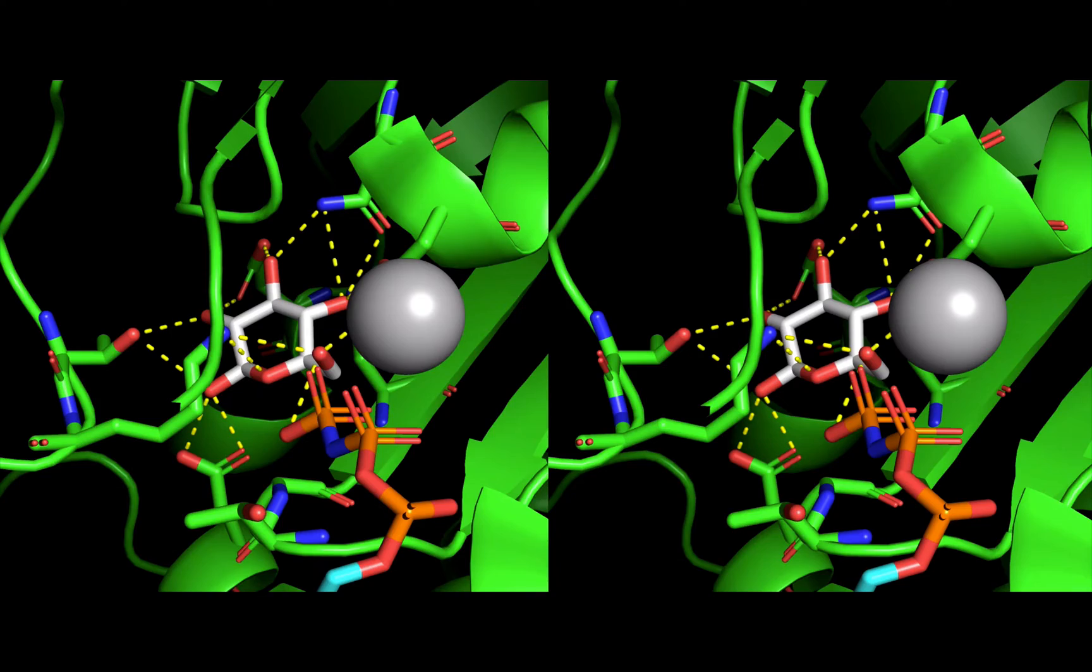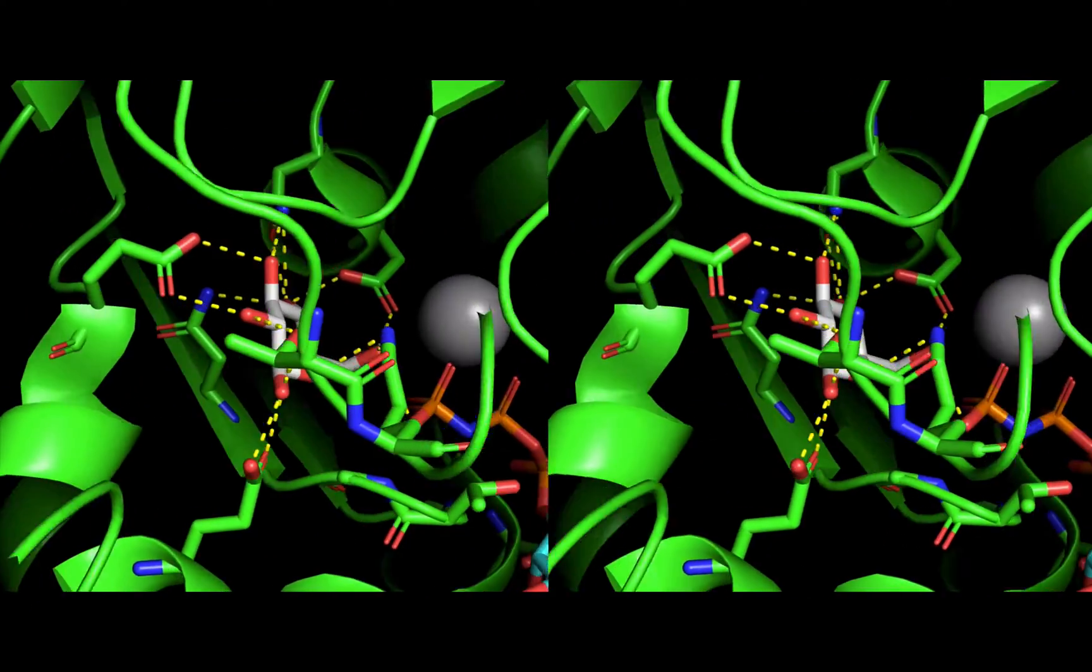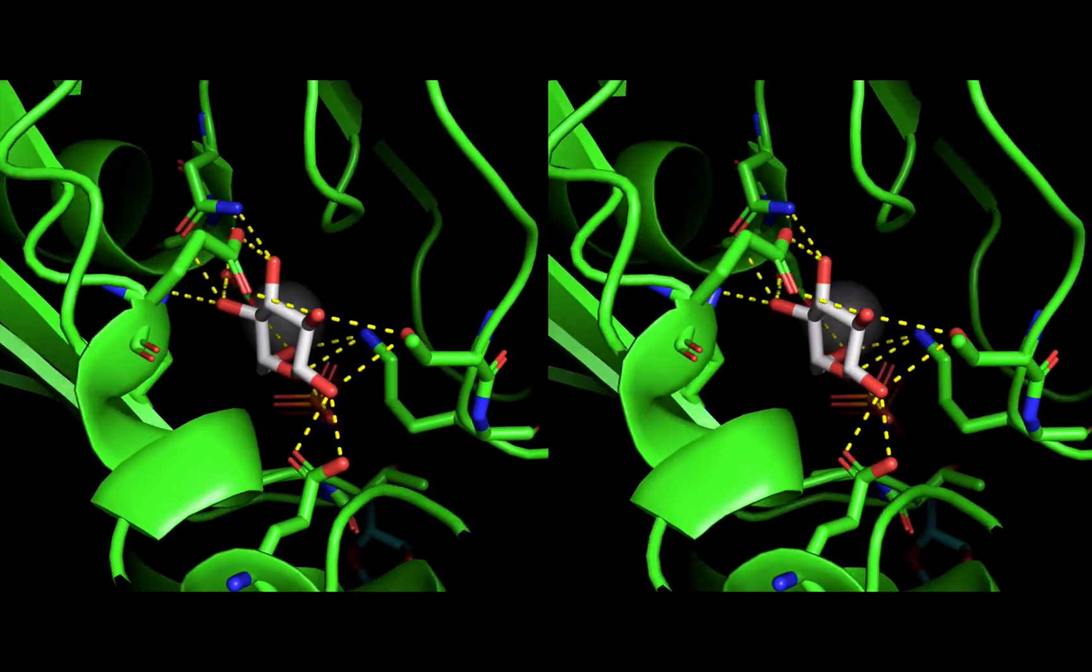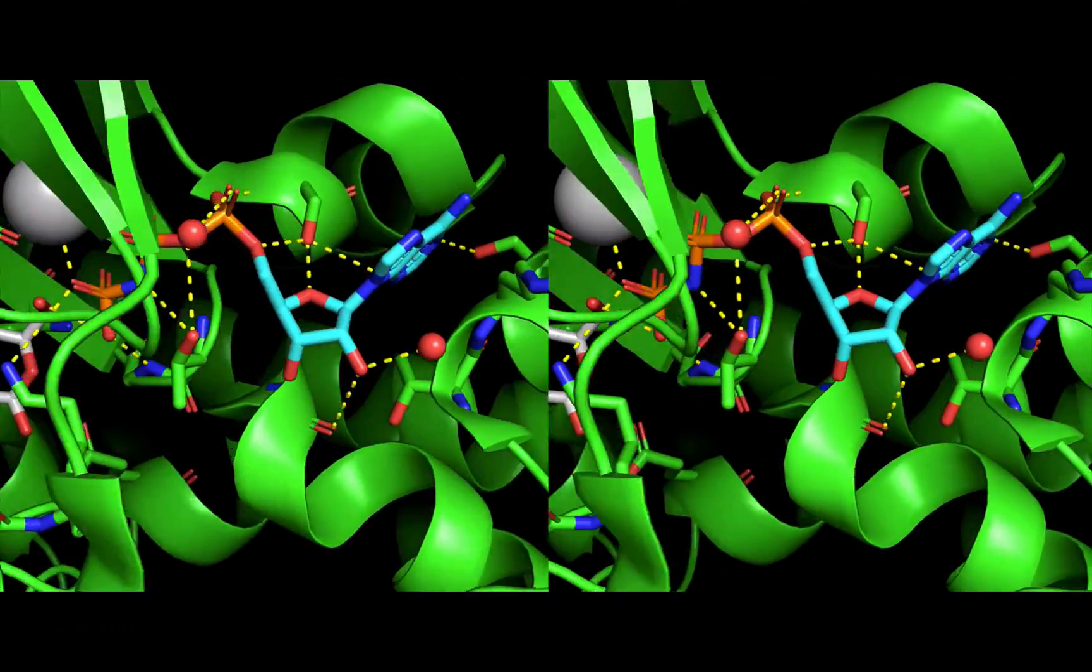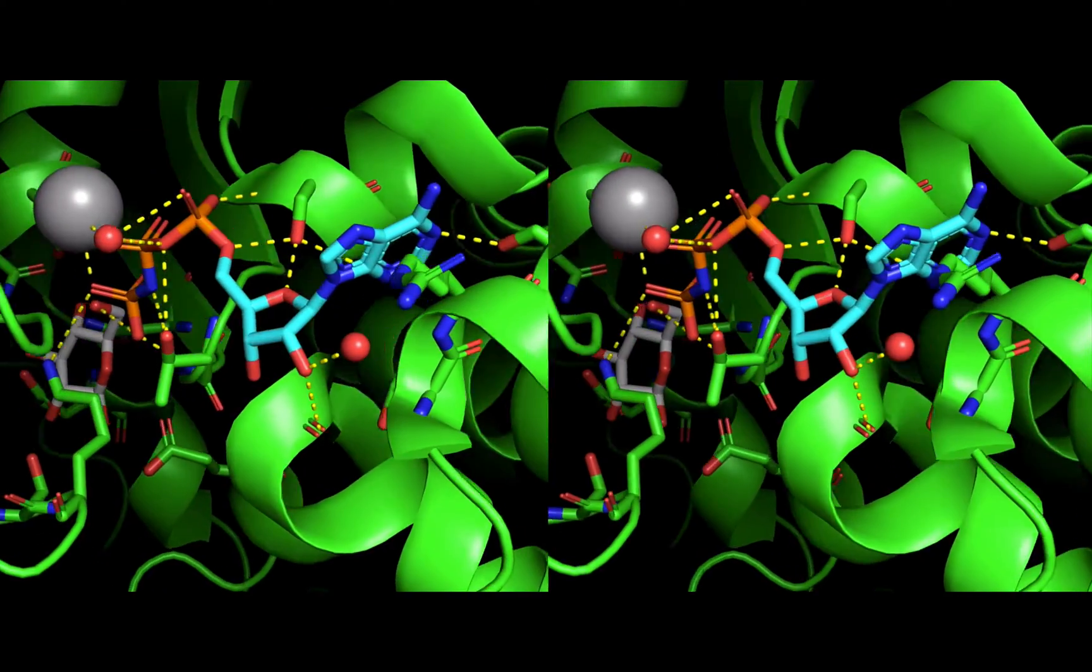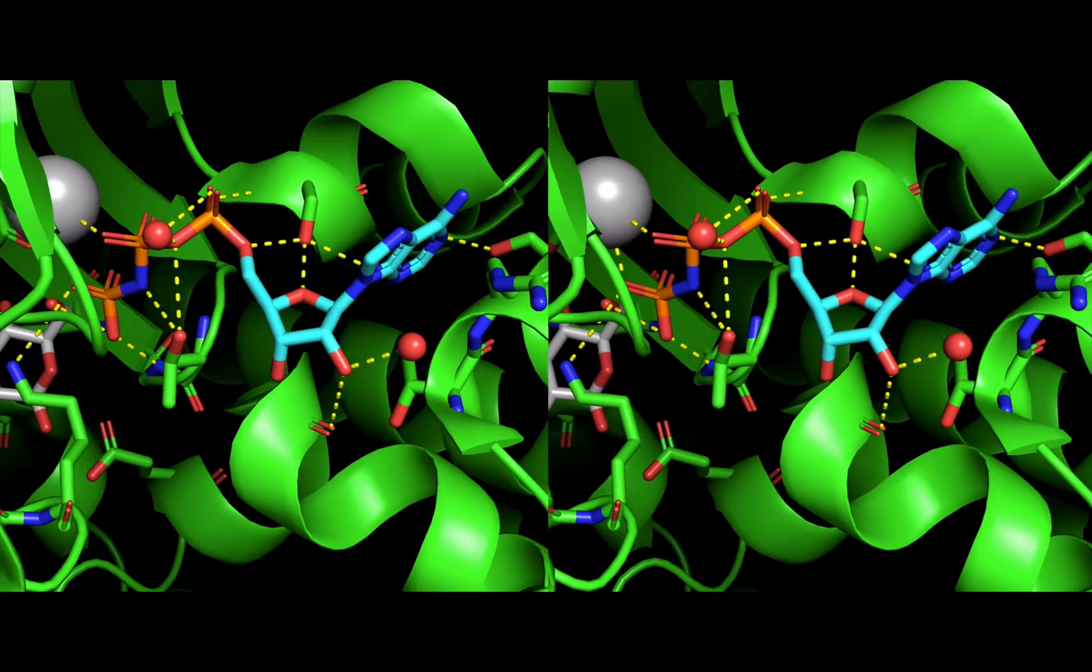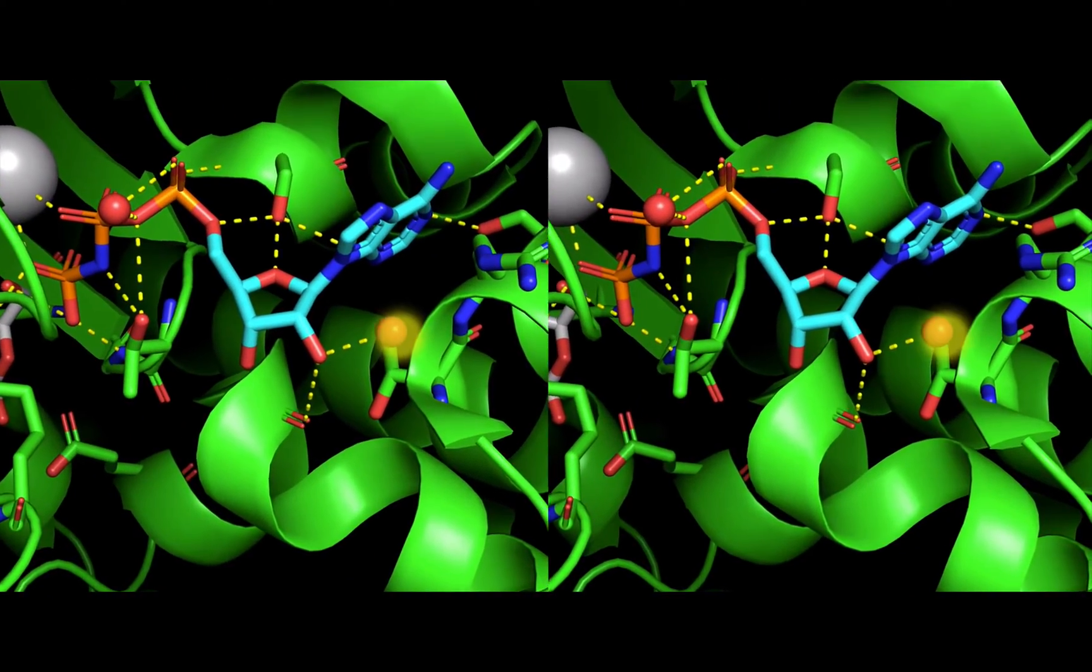The OH groups on glucose are interacting with nearby amino acid residues in hydrogen bonds. I've shown the important active site residues as green sticks and the hydrogen bonds as yellow dashes.